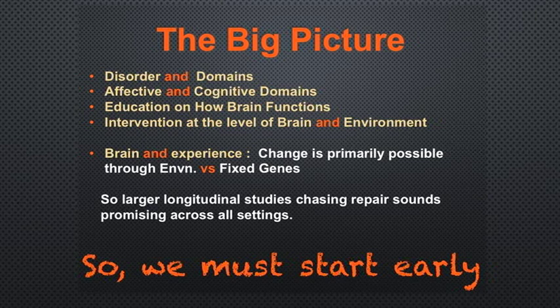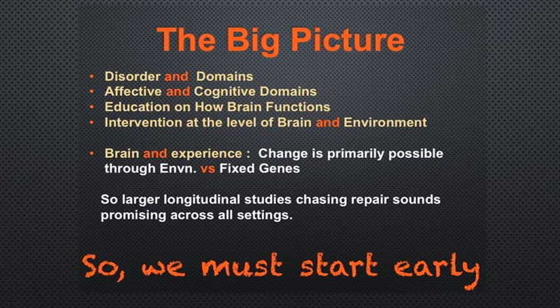Larger longitudinal studies chasing repair sounds promising across all settings. We must start early — like Dr. Emerald's monkey studies, which showed that social functioning was fine if you started early, even if you destroyed the amygdala. I sit here thinking about how all these fields need to connect — the monkey works, mouse works, language work, things in the classrooms and labs and clinics together. All these studies are converging. This is precision treatment — the name of the game at NIMH. Risk factors to stop suicide include: stopping fighting between parents, perception of being supported, supporting the school, self-esteem, family flexibility, thinking the family supports them, having family depression treated, and removing means like guns.